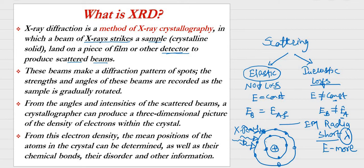Those electrons are in equilibrium and do not want that extra energy. Therefore, after a short time they release the energy — the X-ray beam causes the electrons to release energy, and this is how X-rays get scattered from different electrons within the atom. This scattered beam is captured by the detector.